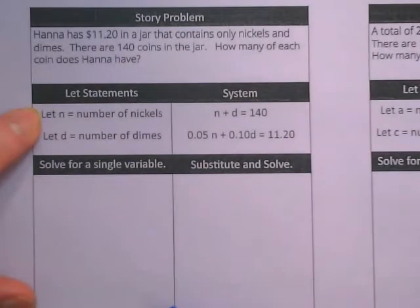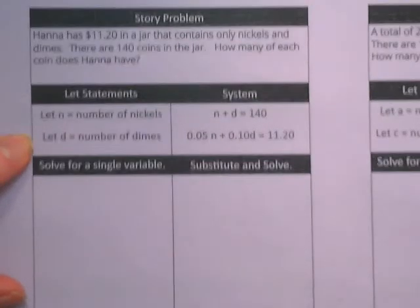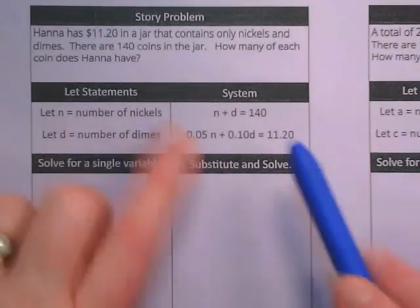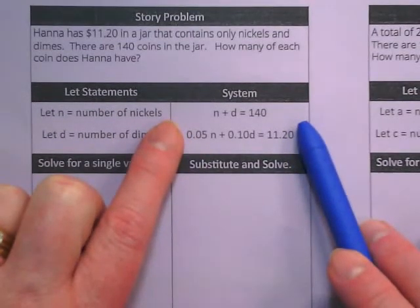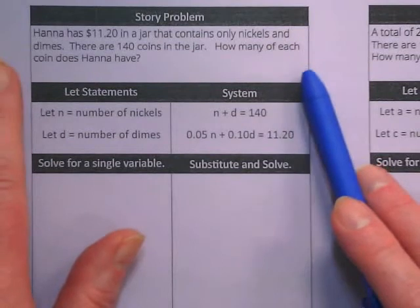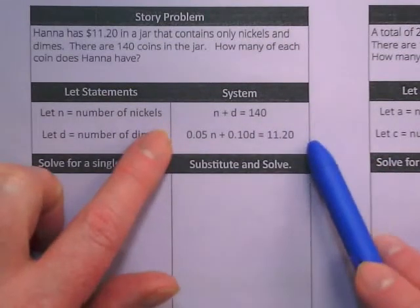So we're saying N is nickels, D is dimes, which makes sense, right? Take a look at the equations and look back up in what the word problem said that got these equations created.